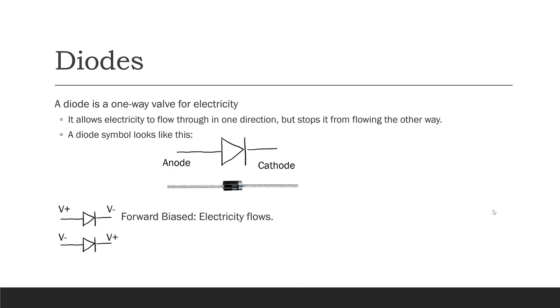But if you apply voltage in the opposite direction, with a negative voltage on the anode and a positive on the cathode, then we say that the diode is reverse biased, and electricity does not flow.